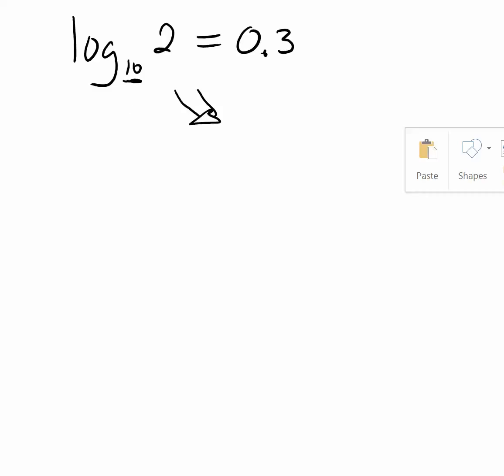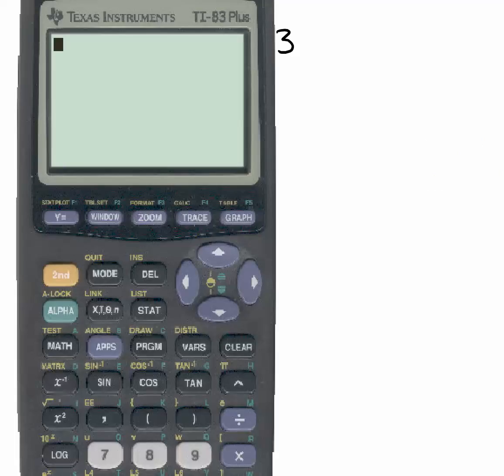First and foremost, the default for log is base 10. You can actually change it up, but if you just punch log in a calculator, automatically it just means base 10. So let's see if this is actually correct. Let me punch it into a calculator. So if I go log, the button right here on the calculator, log of 2.